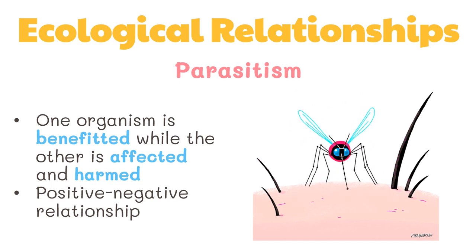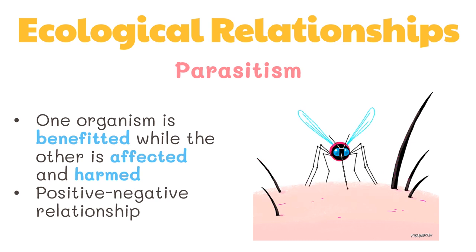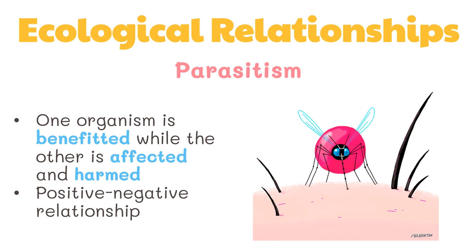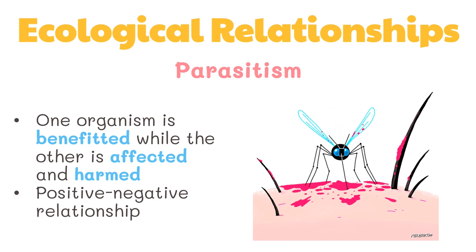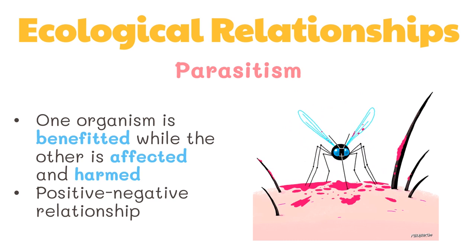Parasitism is a positive-negative relationship where one organism is benefited while the other is harmed. The organism that benefits is called the parasite, which is usually smaller than the host. The mosquito, for example, is a parasite that lives outside the body of the host and sucks blood from animals or humans. Some parasites cause diseases — bacteria and microscopic organisms can live inside the host and cause illnesses like pneumonia and malaria.